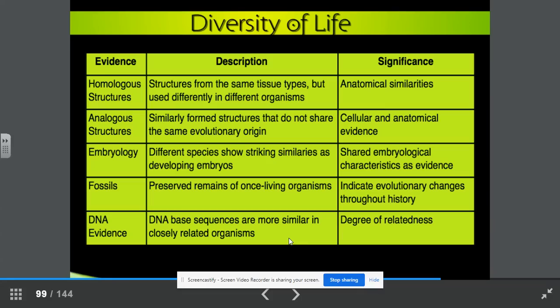So look at this chart. We have evidence, description, and significance. We know that homologous structures are structures from the same tissue types but used differently in different organisms. They have anatomical similarities. Analogous structures are similarly formed structures that do not share the same evolutionary origin. They have cellular and anatomical evidence. Embryology, or the study of embryos of different species, different species show striking similarities as developing embryos, as you will see in the next slide. They have a shared embryological characteristics as evidence. Fossils are preserved remains of once living organisms. These indicate evolutionary changes throughout history. And then we have DNA evidence. DNA-based sequences are more similar in closely related organisms. The significance is the degree of relatedness.